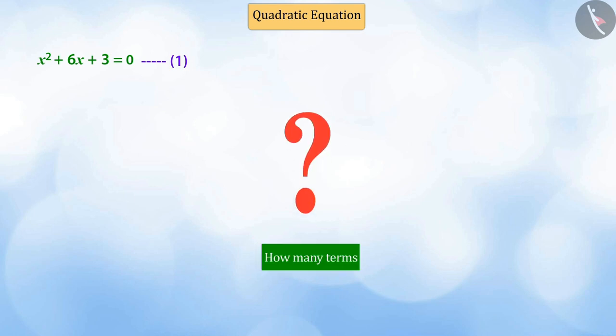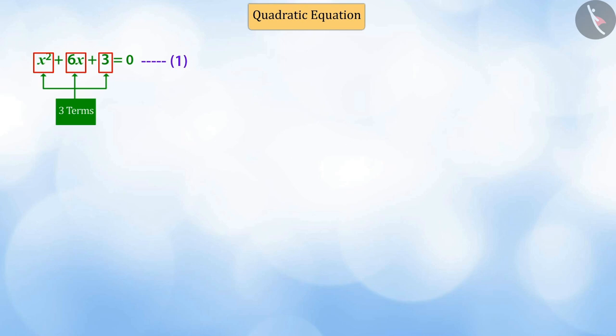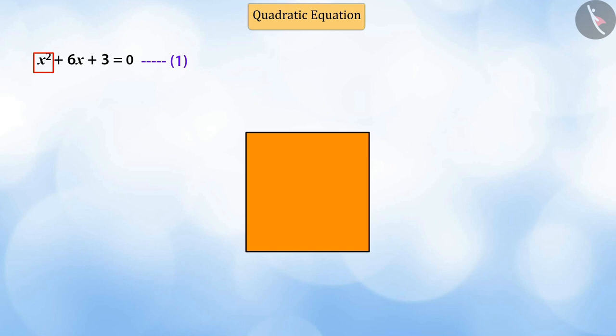How many terms can you see in the given equation? Absolutely right! This equation has three terms. Let us observe them, talking about the first term of the equation. Let it be a square, each side of which is x, whose area is x square.